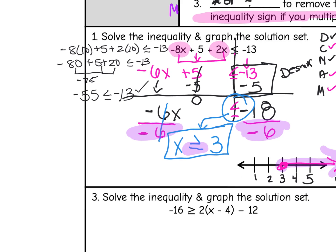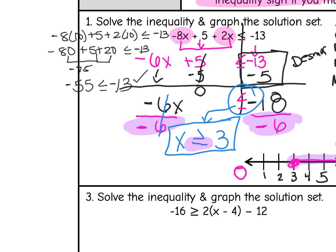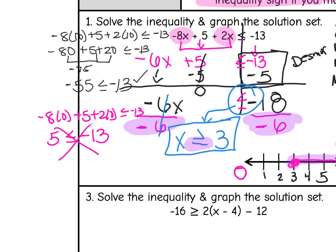Let's say we forgot to flip the sign and kept it as less than or equal to. I'll test with x = 0, which is on the other side of the number line. Plugging in: negative 8 times 0 plus 5 plus 2 times 0, which should be less than or equal to negative 13. That gives 5 is less than or equal to negative 13 — that is not a true statement. This proves that forgetting to flip the sign gives an incorrect inequality.